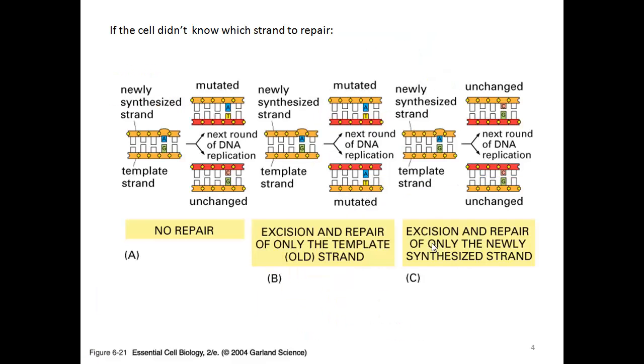Before we get to the third mechanism of repair, we'll ask: when the cell encounters a mutation, drawn mostly as a bubble, how does it know which strand to repair? This picture is not very realistic because really the bubbles are on both sides.